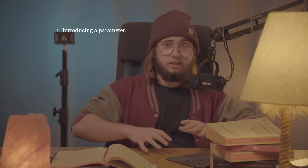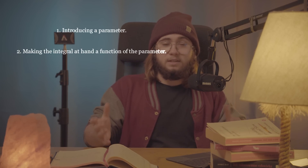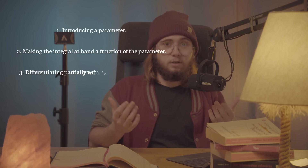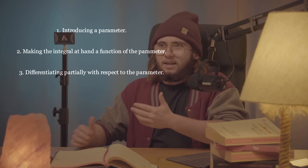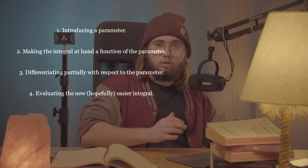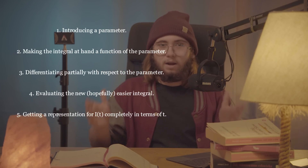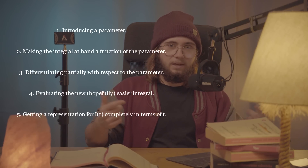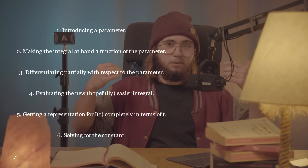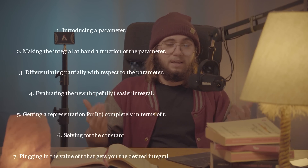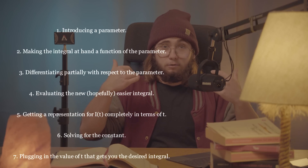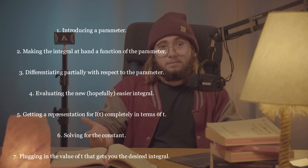As a quick recap, the Feynman trick is all about simplifying your integrand by introducing a parameter to your integral and making it a function of that parameter, then differentiating everything partially with respect to the parameter, then calculating the easier new integral, retrieving a second definition for your function of the parameter, finding the constant term, and then plugging in the desired value of t to give the value for your integral. And you're done.